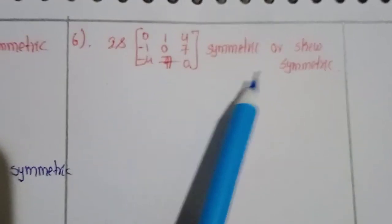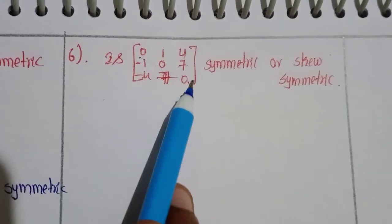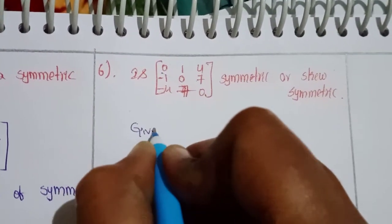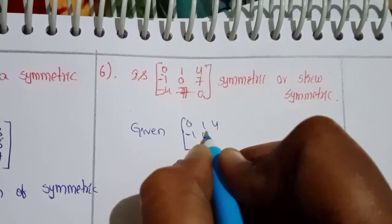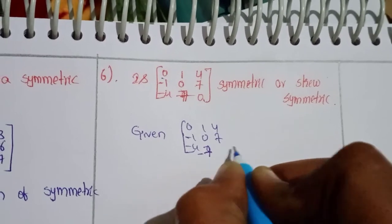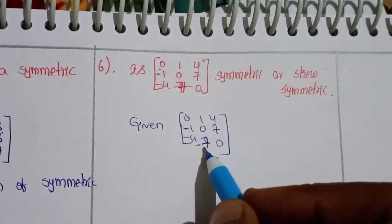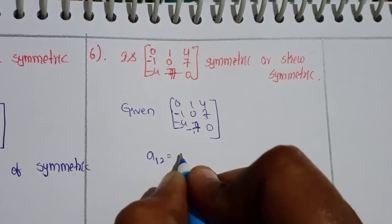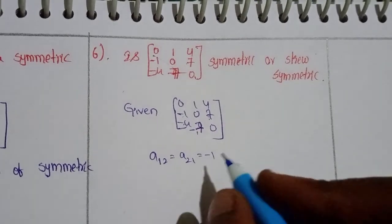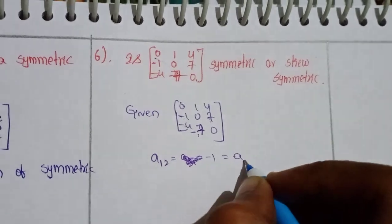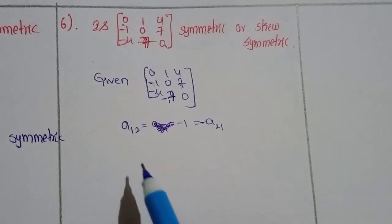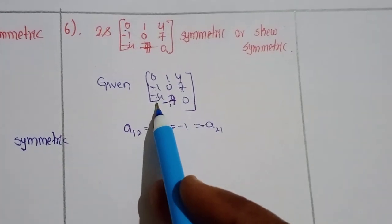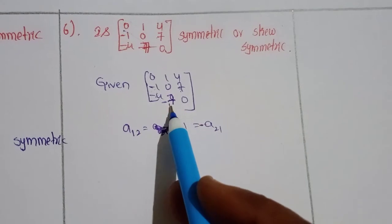Problem 6: Determine whether the given matrix is symmetric or skew symmetric. The diagonal elements are all equal to 0, which indicates it may be skew symmetric. Given matrix: [0, 1, 4; -1, 0, 7; -4, -7, 0]. Checking opposite elements: A(1,2) = 1 and A(2,1) = -1, so they are negatives of each other.